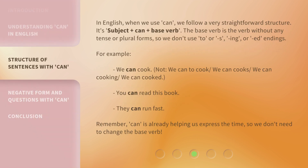In English, when we use can, we follow a very straightforward structure. It's subject plus can plus base verb. The base verb is the verb without any tense or plural forms. So we don't use 'to', or 's', 'ing', or 'ed' endings. For example: we can cook — not 'we can to cook', 'we can cooks', 'we can cooking', or 'we can cooked'. You can read this book. They can run fast. Remember, can is already helping us express the time, so we don't need to change the base verb.